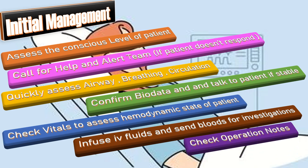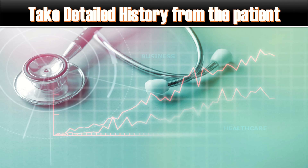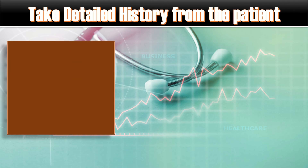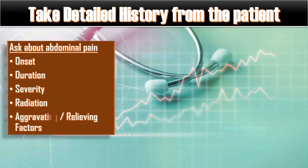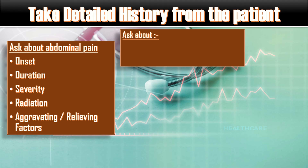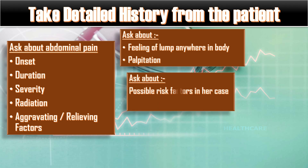Take a detailed history from the patient. As her presenting complaint is abdominal pain, ask about its onset, duration, severity, radiation, and aggravating and relieving factors. Ask about any palpable lump anywhere in the body and whether she experiences palpitations. Also ask about possible risk factors as explained in the causes.